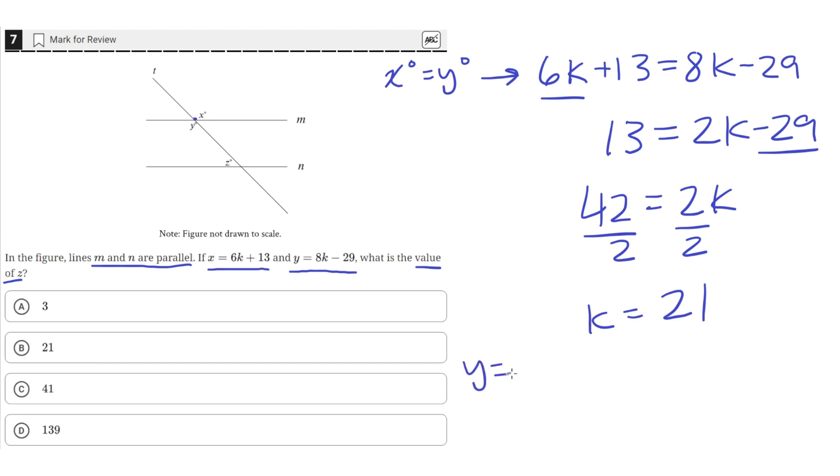So Y is equal to 8K minus 29. And since K is 21, we can plug that in for K.